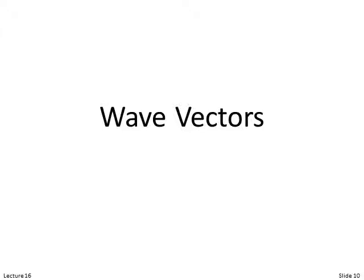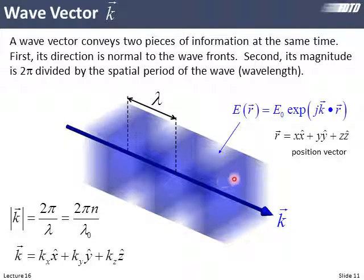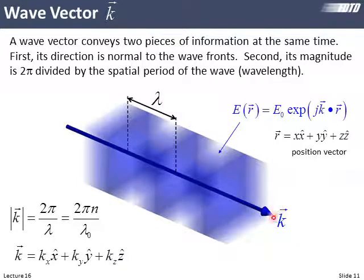Now our first topic is wave vectors. A wave vector points in the direction of wave propagation. What I'm showing here is a wave traveling in the direction of k; the fuzzy square regions represent planes of equal phase. The wave vector k points normal to these planes in the direction of travel, and the spacing between planes gives the wavelength. So k not only points in the direction of the wave, but its magnitude is 2π divided by the period of the wave.